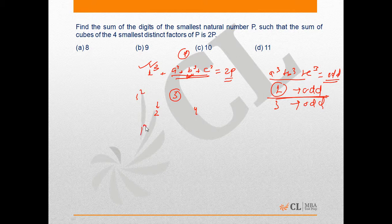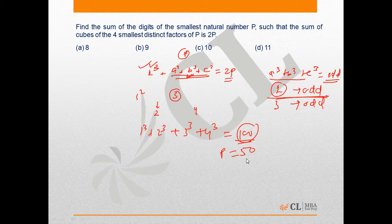Now check what is the possible value of P. So from here, 1³ + 2³ + 3³ + 4³, and this comes out to be 100, and half of 100 is 50, which means the value of P is 50. And now we have to check whether the factors that we have taken here are possible factors of P or not.